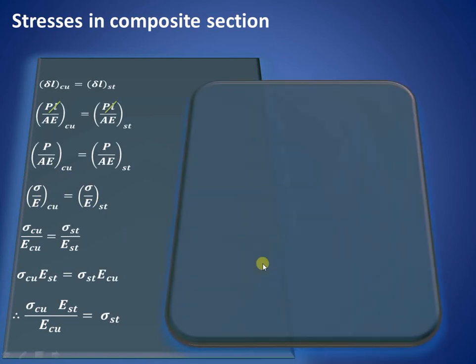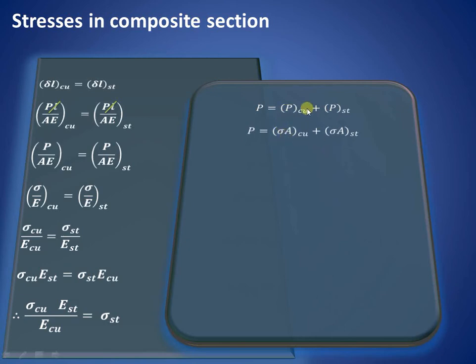The second important condition is that the total axial load P acting on the composite section is shared between the copper tube and the steel bar. Since load equals stress times area, P equals σ_Cu × A_Cu plus σ_St × A_St.